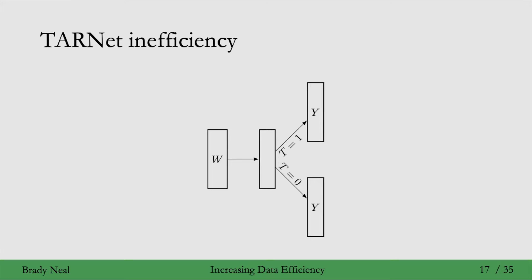However, what I said on the last slide was not completely true. It is true that the subnetwork that maps from W to this treatment agnostic representation uses all of the data. It's not true that this whole network uses all of the data.